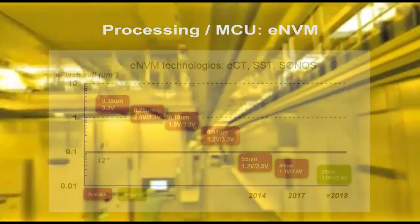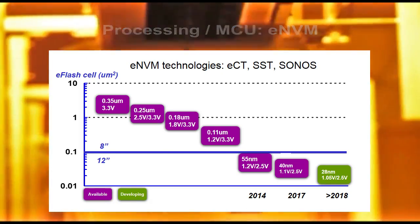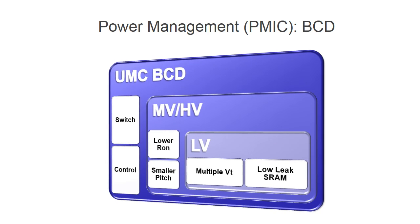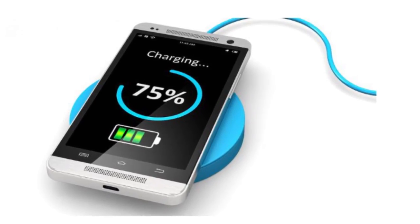For processing and MCUs, we offer a selection of embedded non-volatile memory technology in both commercial and automotive grades down to 40nm. For power management applications, our BCD processes are used in PMIC applications such as wireless charging.